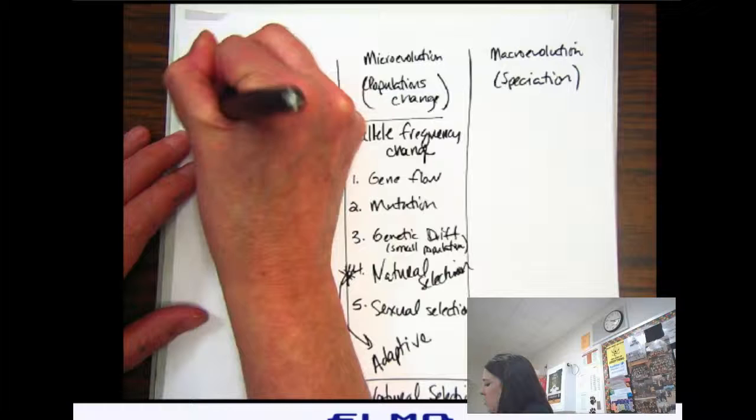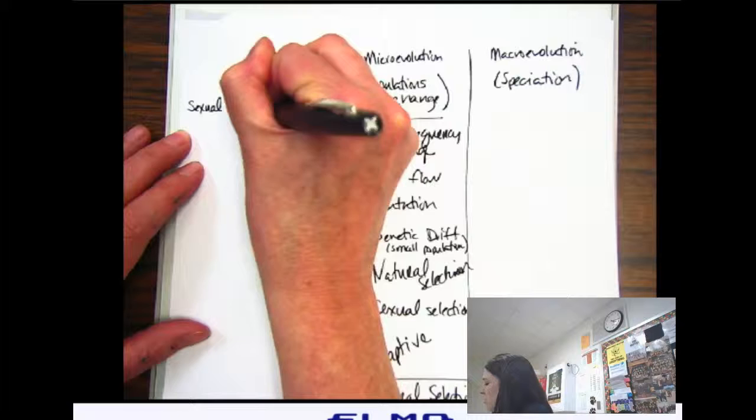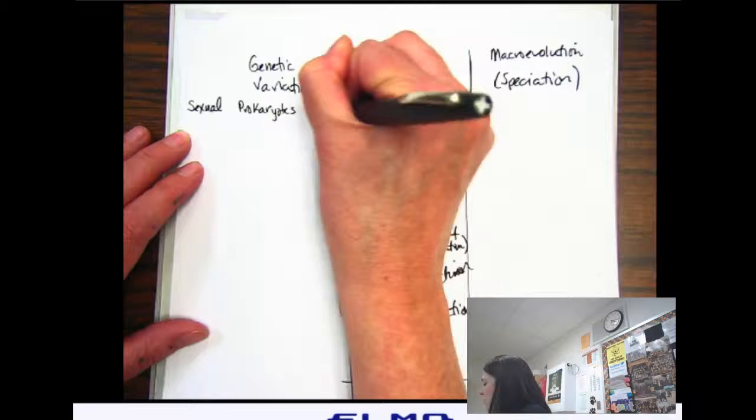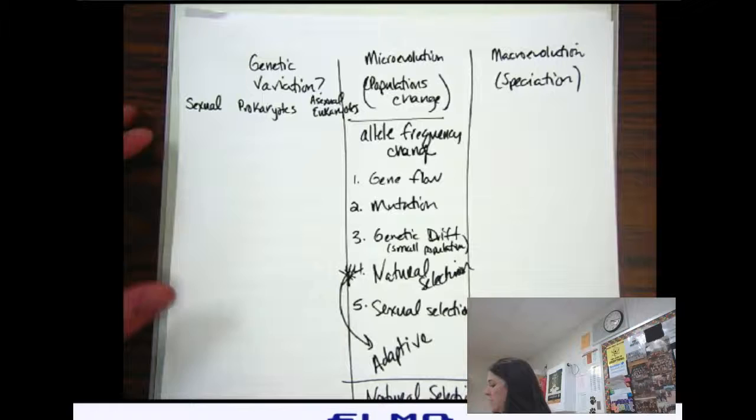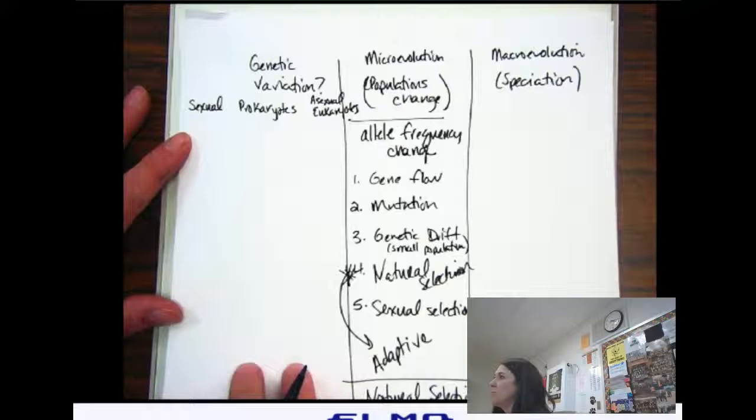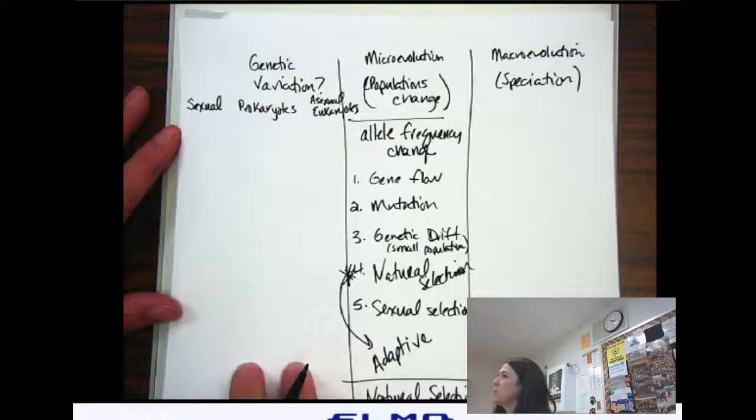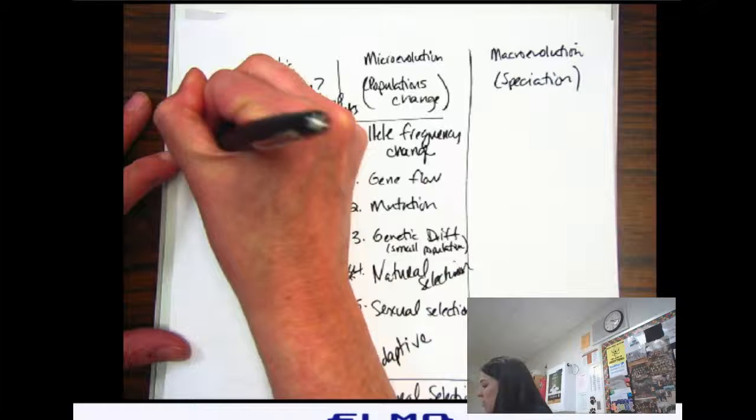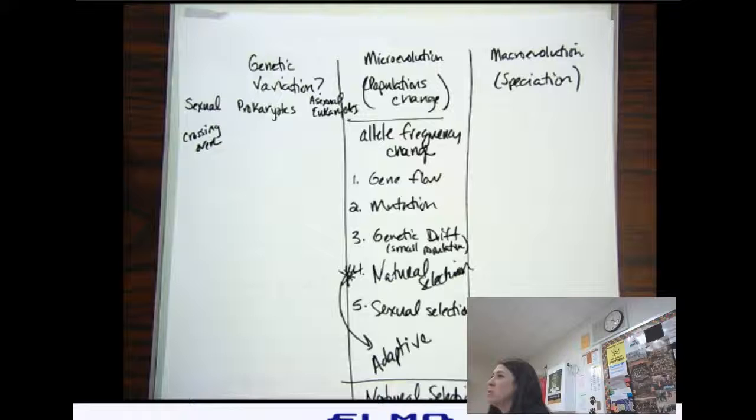So we're going to put this into sexual species, prokaryotes, and asexual eukaryotes. So where does genetic variation come from? What's one? One way we can get new alleles or new genes in a population. And it should go in which of my categories? So crossing over because it happens in gamete formation in prophase I of meiosis.